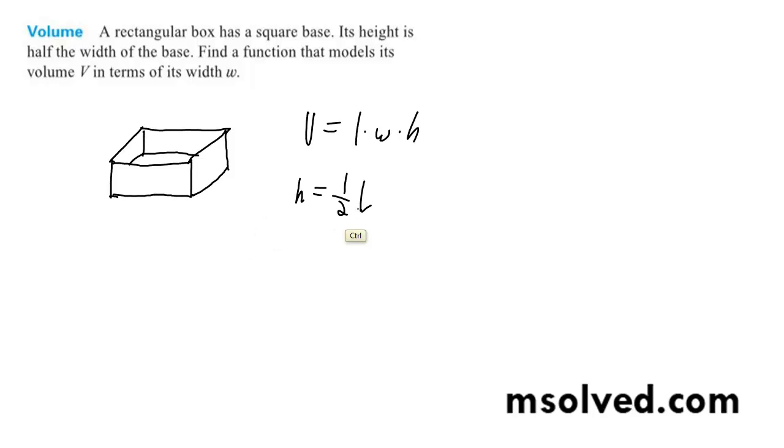Actually, it's going to be one-half w. So our volume is going to be equal to one-half w times - or we can do it like this - w over 2 times w times w, and we're just going to end up with w cubed over 2. And that's it.